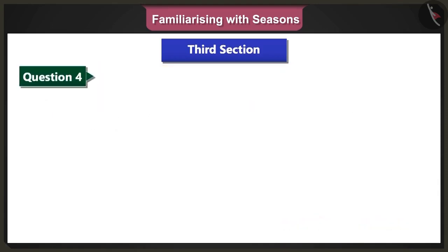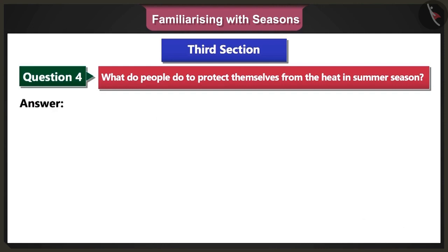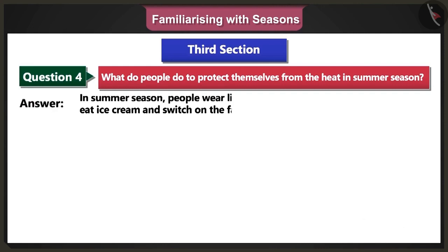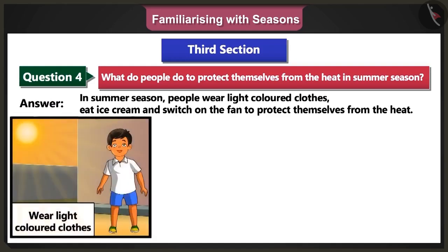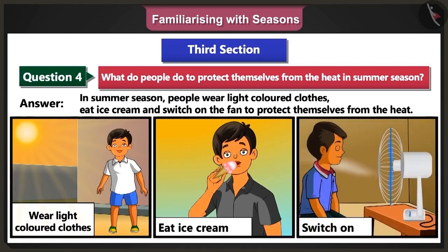Fourth question: What do people do to protect themselves from the heat in summer season? Answer: In summer season, people wear light-coloured clothes, eat ice cream, and switch on the fan to protect themselves from the heat.